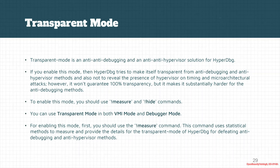Some new features will be added to it, and there are still other methods to evade HyperDBG, but it will be enhanced over time. If you want to enable this mode of execution, you should use the !measure and !hide commands. The transparent mode can be used in both VMI mode and debugger mode.